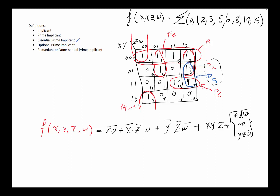That brings us to the end of this introduction to KMAP and its various implicant types. We want to find the biggest implicants — the prime implicants. First we write all the essential ones, then for optional prime implicants we decide which to use, and redundant prime implicants are never used because they are already covered.